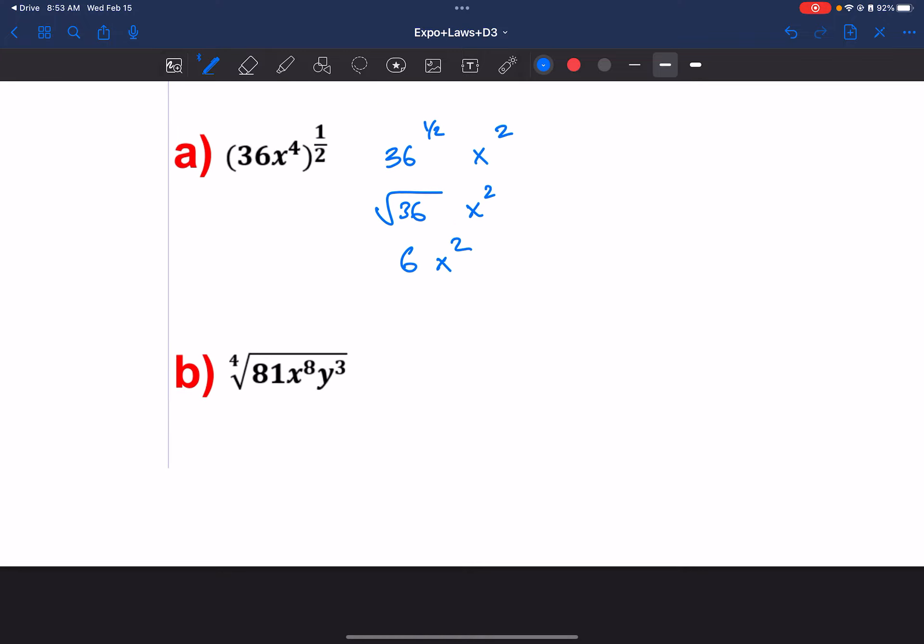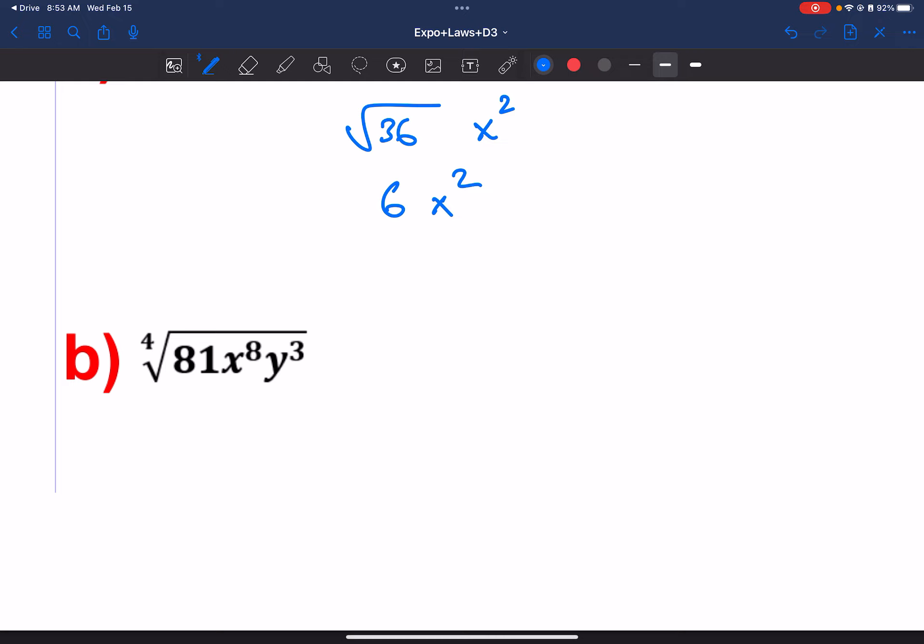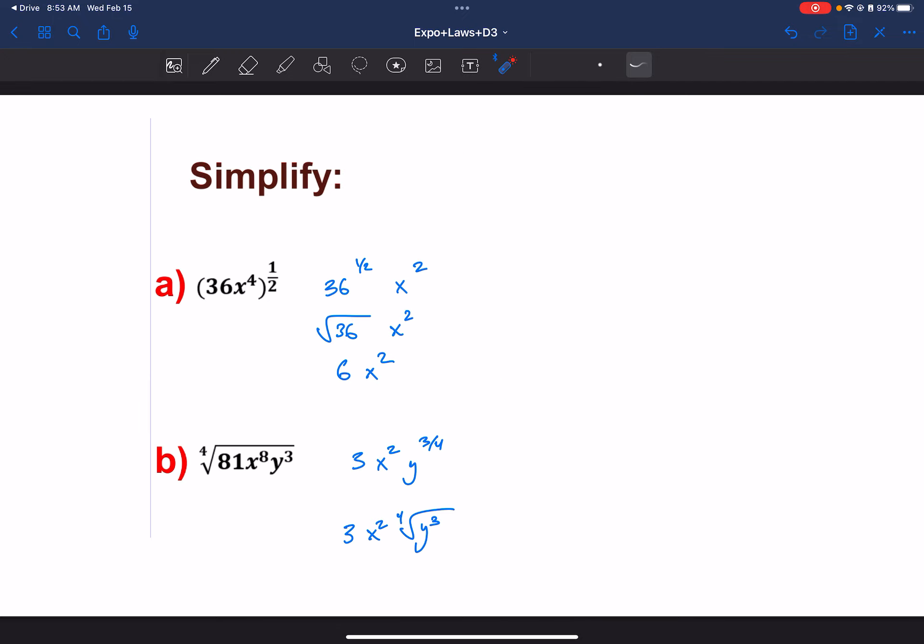All right. Same idea down here. We have 4th root. So really what we have is we're putting everything, dividing it by 4 in terms of the exponents. So this would be x to the second and y to the 3 fourths. The 81, well, 4th root of 81 is 3. So we're kind of left with this. And we can leave it like this, or if we want it as a radical, we can have something like that, where the squared goes with the x. And then we have 4th root of y cubed. All right. Hopefully that makes some sense.